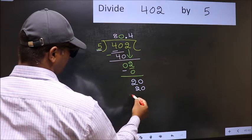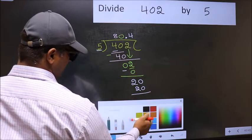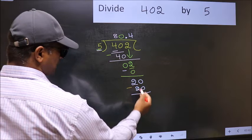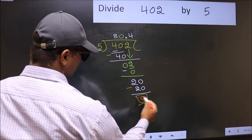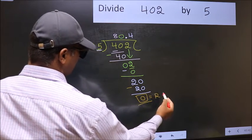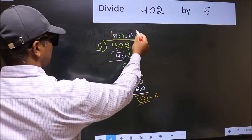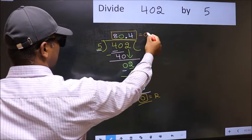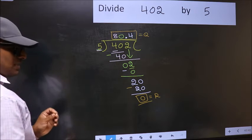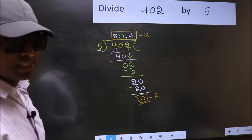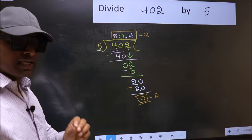Now you should subtract 20 minus 20: 0. So this is our remainder and this is our quotient. Did you understand where the mistake happens? You should not do that mistake.